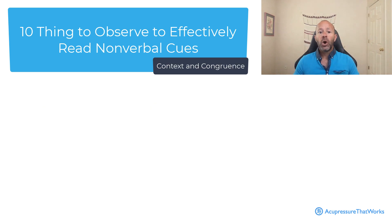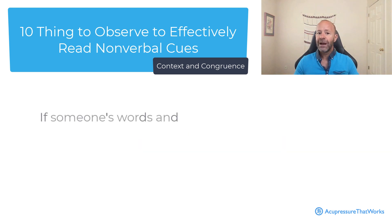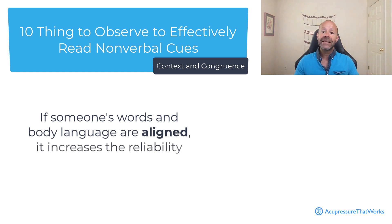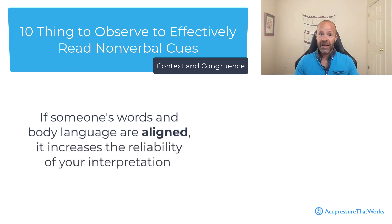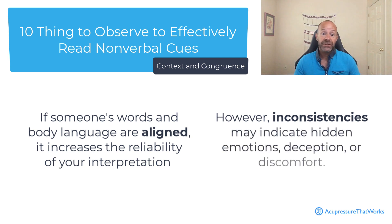Context and congruence. Consider the overall context and congruence between verbal and nonverbal cues. If someone's words and body language are aligned, it increases the reliability of interpretation. However, inconsistencies may indicate hidden emotions, deception, or discomfort.